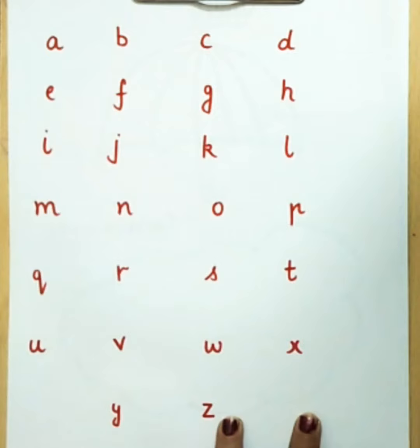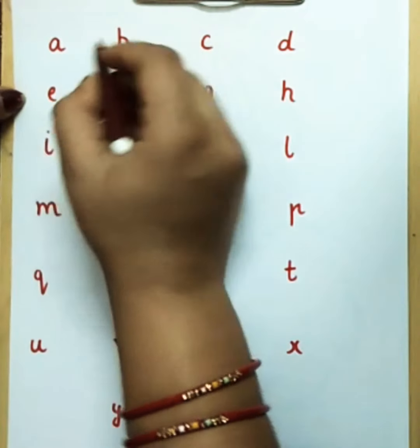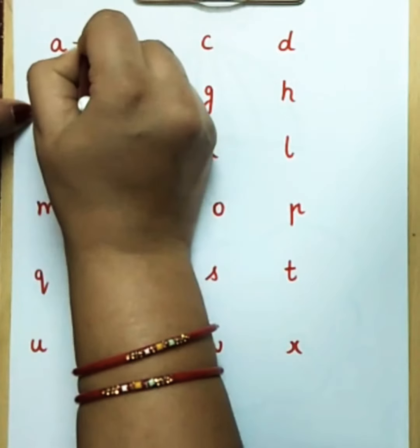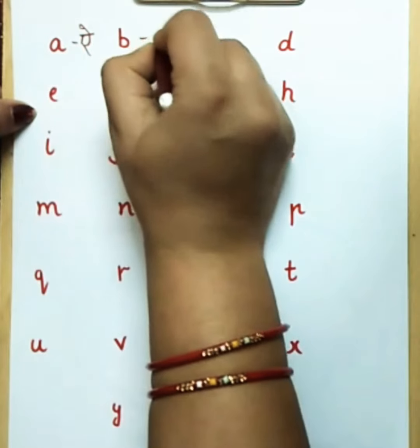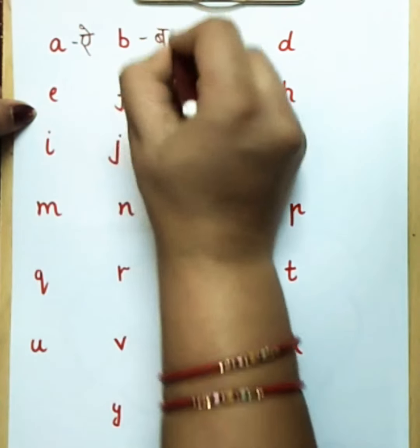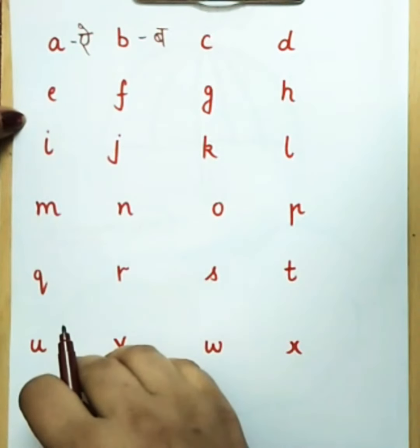These are our alphabets. This is A. What is the sound of A? A. A says A as apple. B says B. B says B as ball.